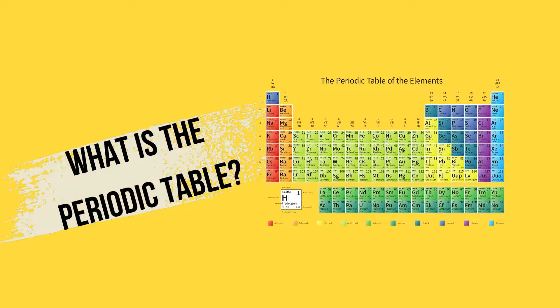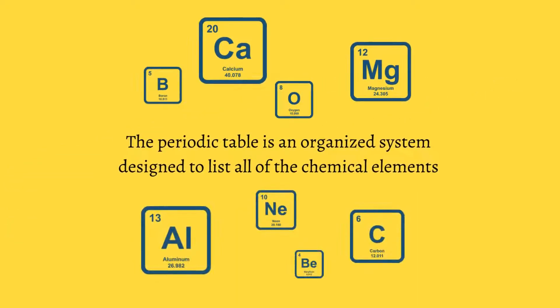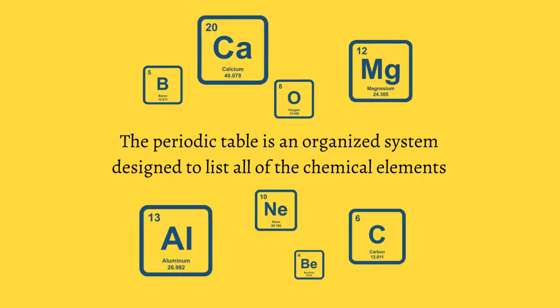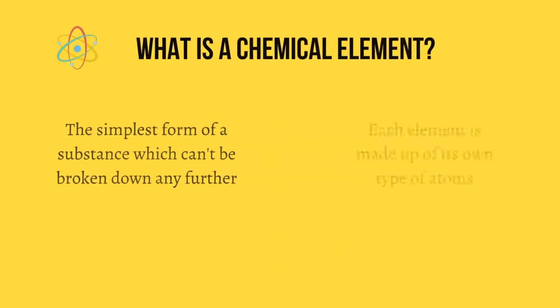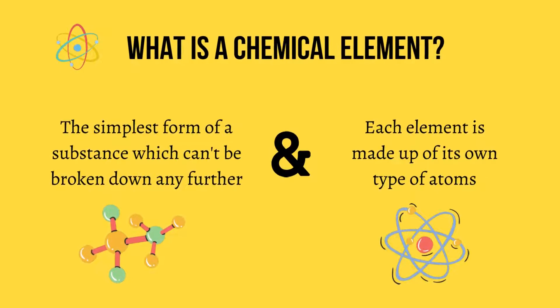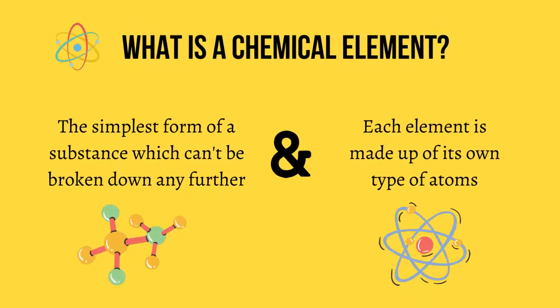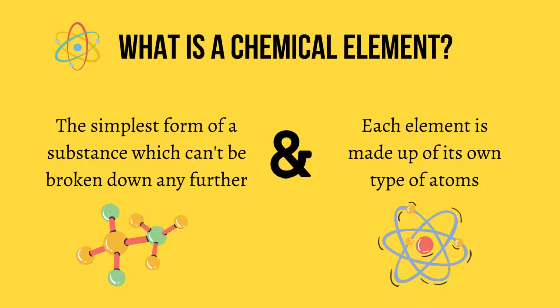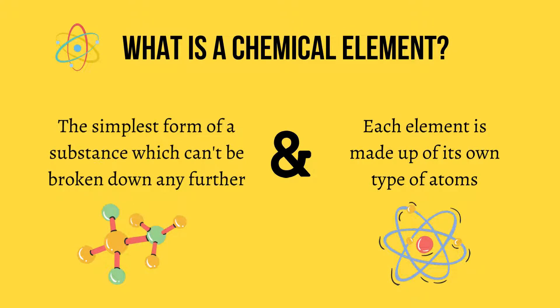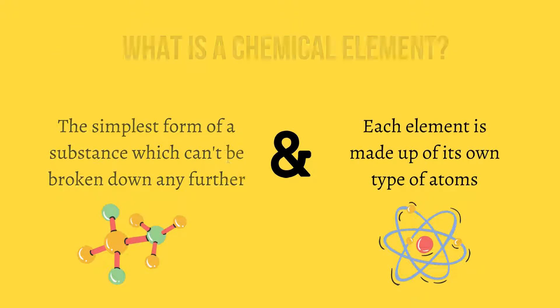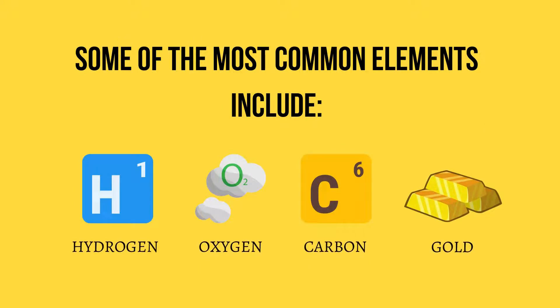What is the periodic table? The periodic table is an organized system designed to list all of the chemical elements. What is a chemical element? It is the simplest form of a substance which can't be broken down any further, and each element is made up of its own type of atoms. Some of the most common elements include hydrogen, oxygen, carbon and gold.